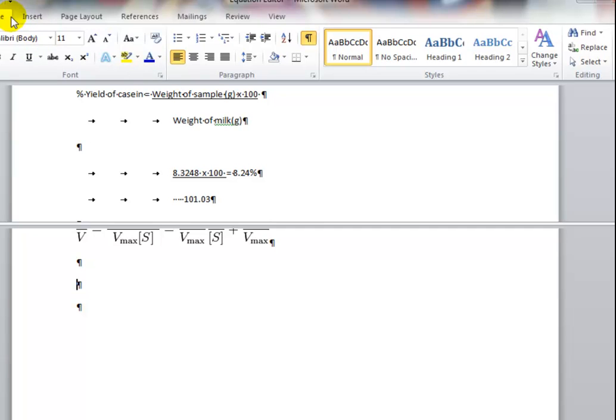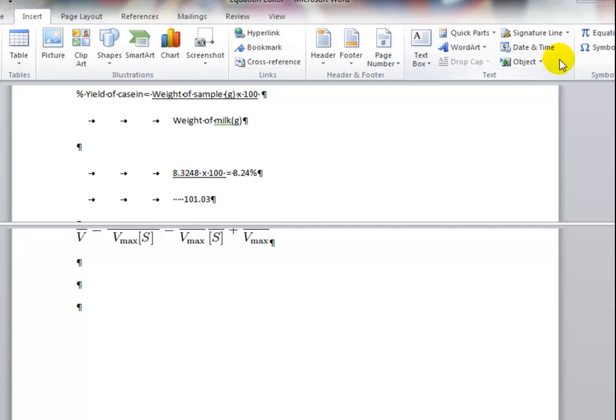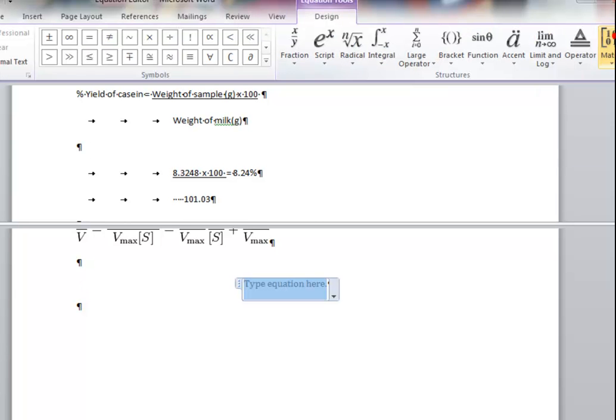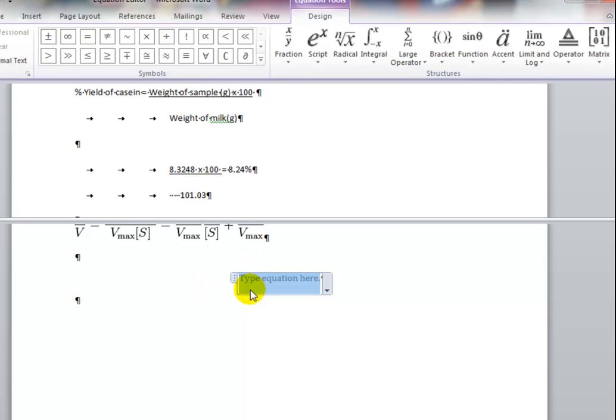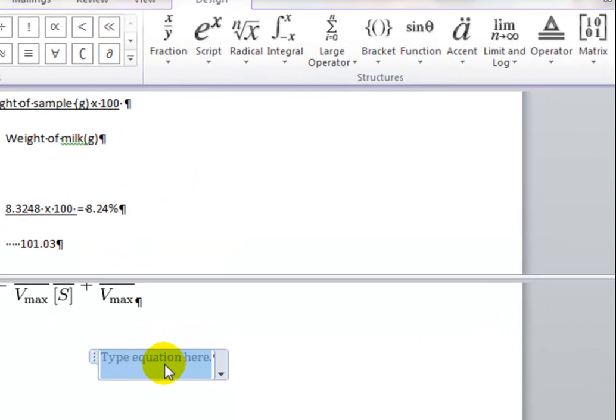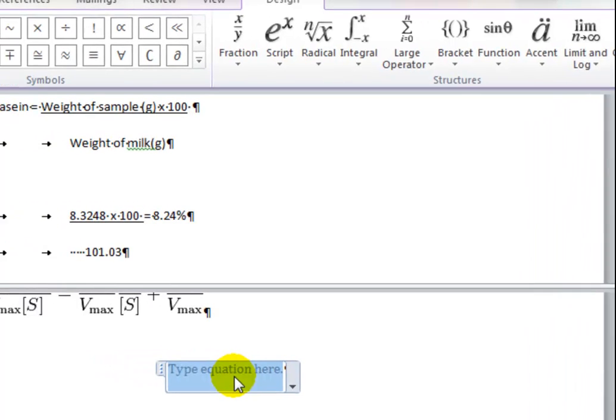So where is this? If you go to the tab thing and you click on Insert, you'll see right over here equation. Click on it, and it opens up this new menu bar. Down here, it's opened up a little window for you to type in, and we're going to type the equation for the percentage yield of casein.